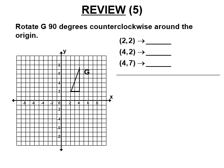Rotate G 90 degrees counterclockwise around the origin. It has to stay the same distance away from the origin. For a 90-degree rotation, you end up one quadrant over. The point at two, two goes to negative two, two. The point at four, seven goes to negative seven, four. That's a 90-degree counterclockwise rotation around the origin.